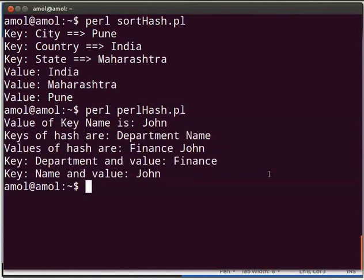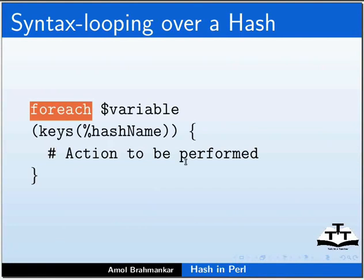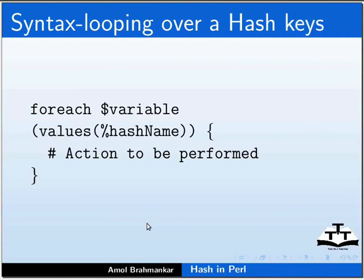Now let us see a few other ways of looping over hash. We can use a foreach loop to iterate over each key of the hash, then perform a set of actions on the value of that key. The syntax is as displayed on the screen. Each iteration of the foreach loop will assign a key from the hash to a dollar variable, then use that dollar variable to fetch the value or perform a set of actions. Similarly we can loop over hash values as shown on the screen.